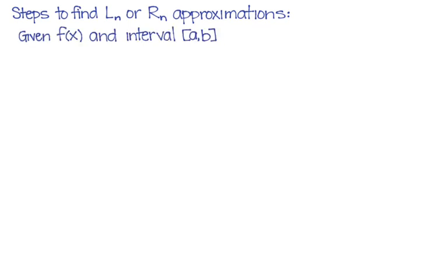So first of all, you're given a function and an interval, and it's a closed interval from A to B. And then you're given a question of either L6 or L5 or L12 or whatever it is, or R5 or R7 or something. And so we're going to find out how we would go about that in general speak.